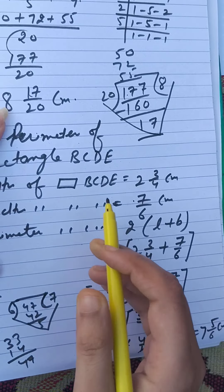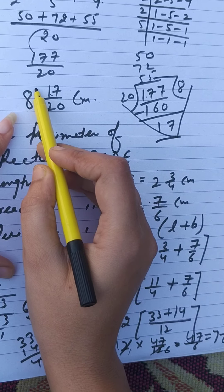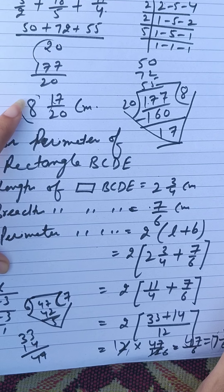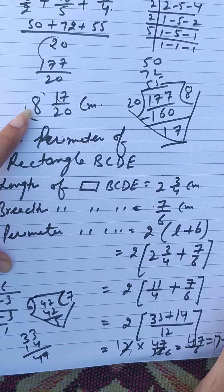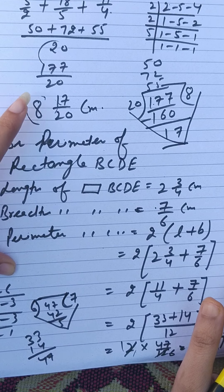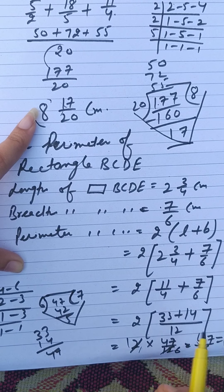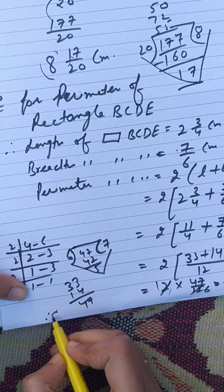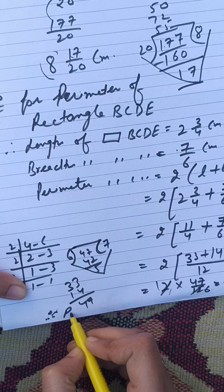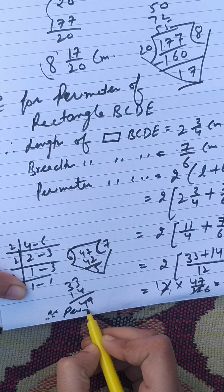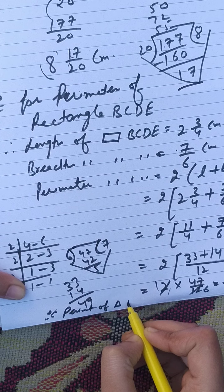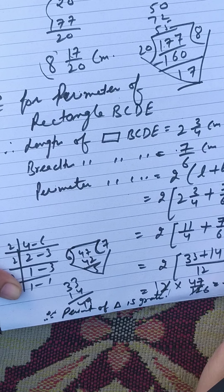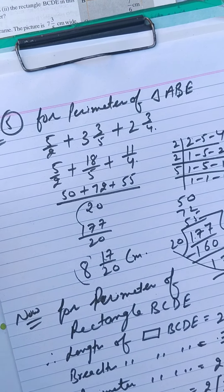The whole number of the triangle's perimeter is 8, and the whole number of the rectangle's perimeter is 7. Since 8 is greater than 7, the perimeter of the triangle is greater. Therefore, the perimeter of triangle ABE is greater. This is our question number 5.